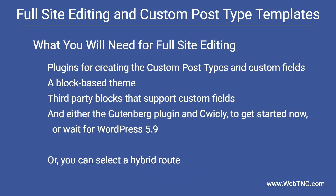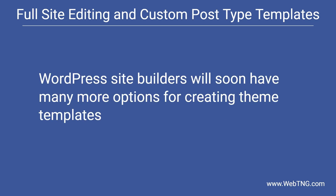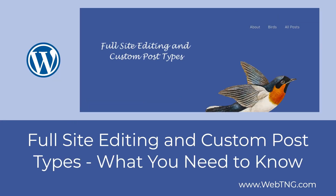To summarize: for full site editing you're going to need plugins for creating the custom post type and custom fields, a block-based theme, and third-party blocks that support custom fields. You'll need either the Gutenberg plugin and Quickly to get started now, or wait for WordPress 5.9, or use a hybrid option. We will soon have many more theming options for working with custom post types, and I think that's a good thing. I hope you found the video useful. There's a text version available on the WebTNG website along with other resources, walkthroughs, and reviews. Thank you for watching.